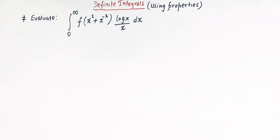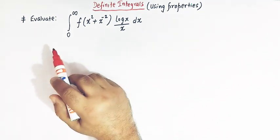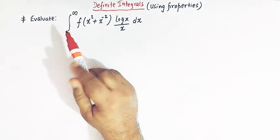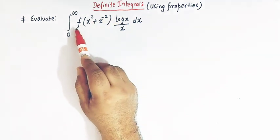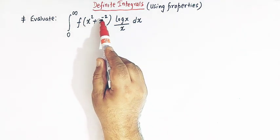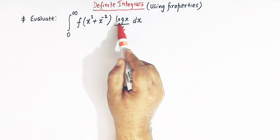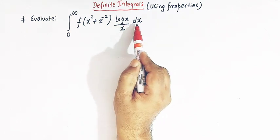Hello viewers! In today's class we are going to discuss one important problem from definite integrals. Here we have to solve the integral from 0 to infinity, where the integrand is f of x squared plus x raised to minus 2, multiplied by log x divided by x, dx.